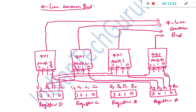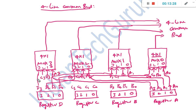We name the multiplexer inputs as: for input 0 — A0, B0, C0, D0; for input 1 — A1, B1, C1, D1; for input 2 — A2, B2, C2, D2; and for input 3 — A3, B3, C3, D3.